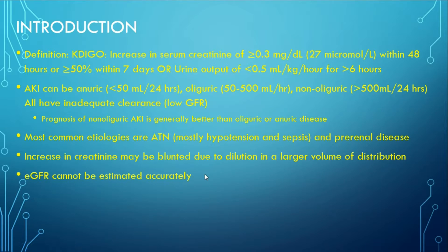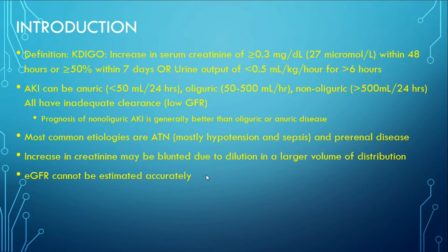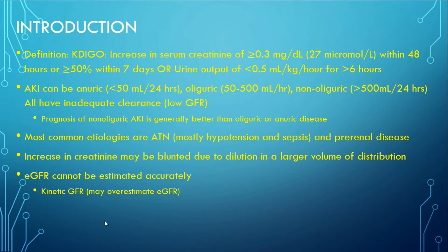The eGFR cannot be estimated accurately in acute kidney injury because it is dynamically changing as the disease progresses. It is not the same as a steady-state condition, whether that is CKD or a normal person, where you can estimate eGFR using formulas such as CKD-EPI or MDRD. When the patient is in AKI, that is not the case. There is a formula called kinetic GFR; however, it can overestimate the GFR because the value constantly changes.